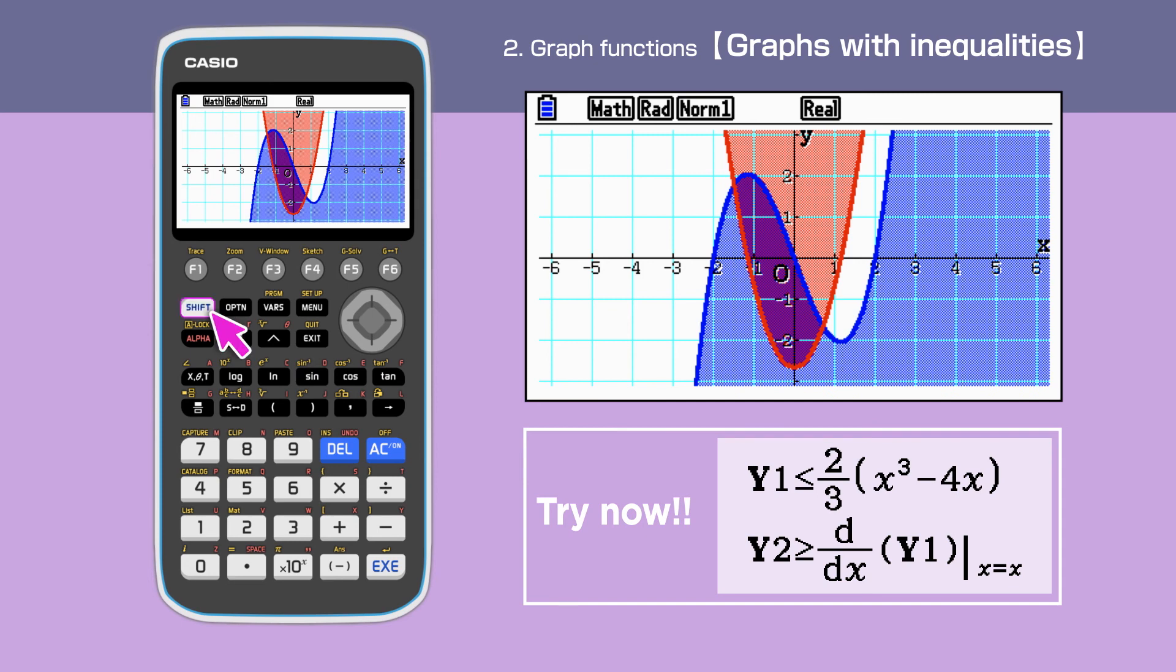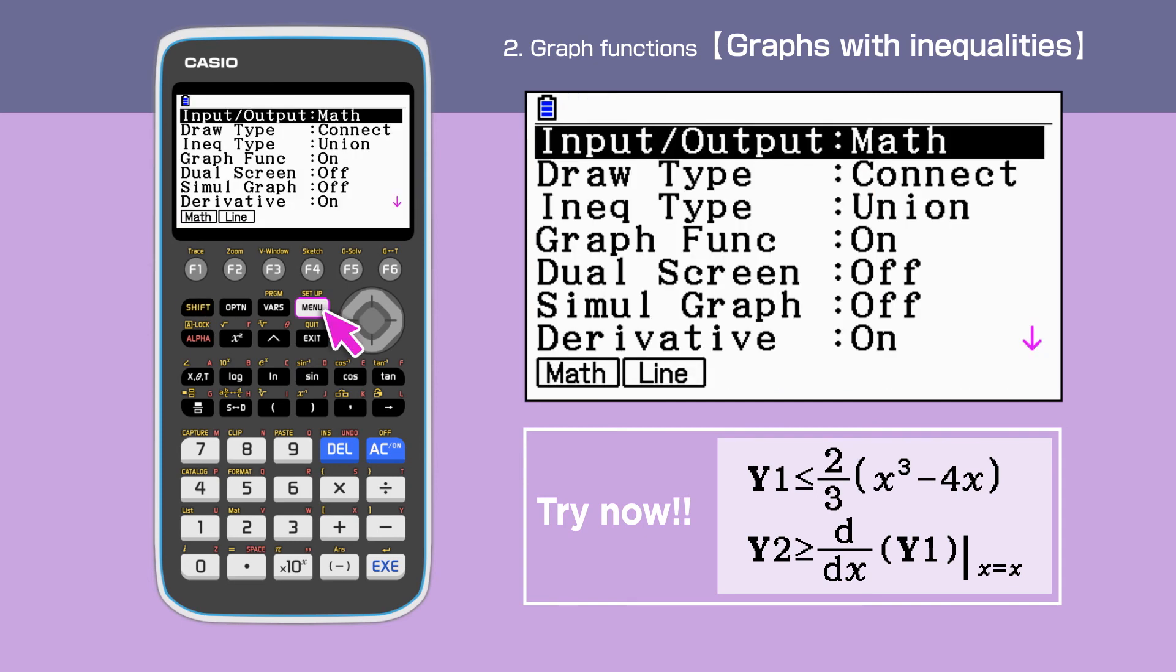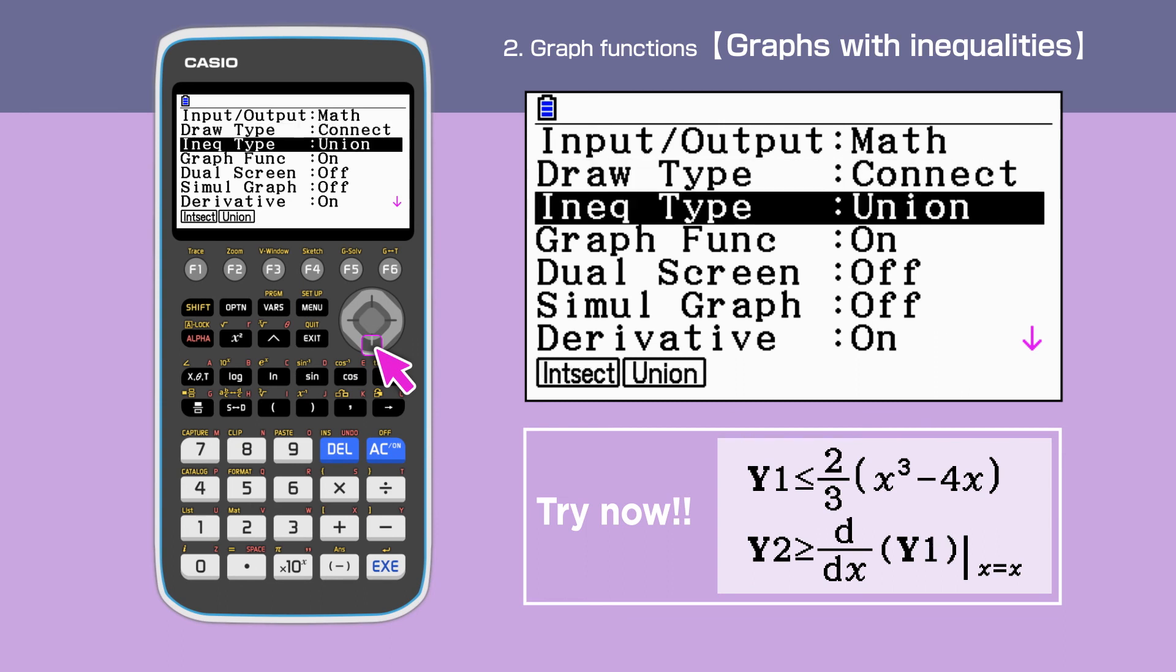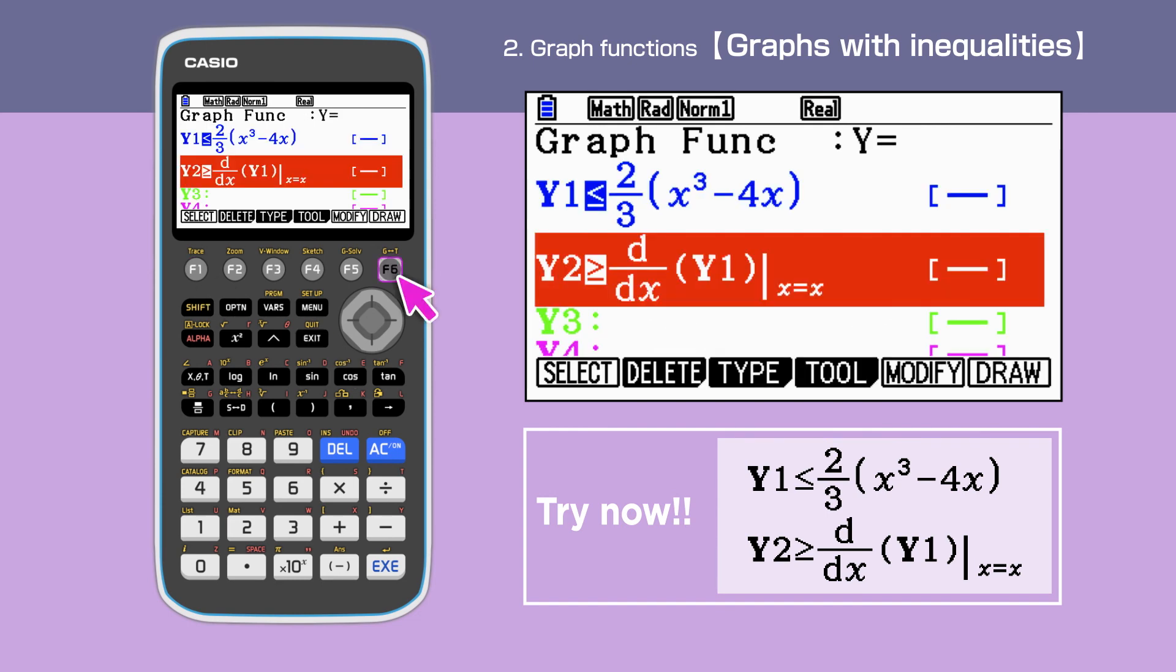To do this, press shift, menu, and change inequality type to intersection. We finish setting up by pressing exit and enter F6 to draw.